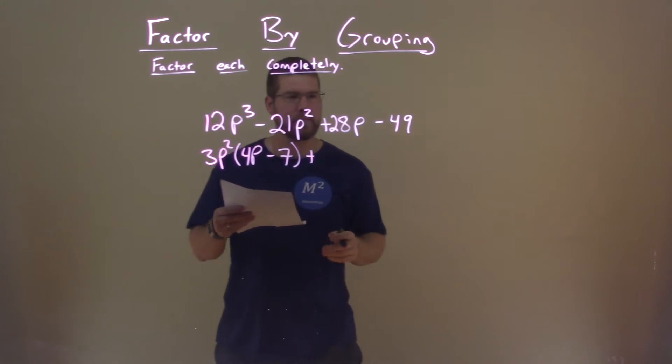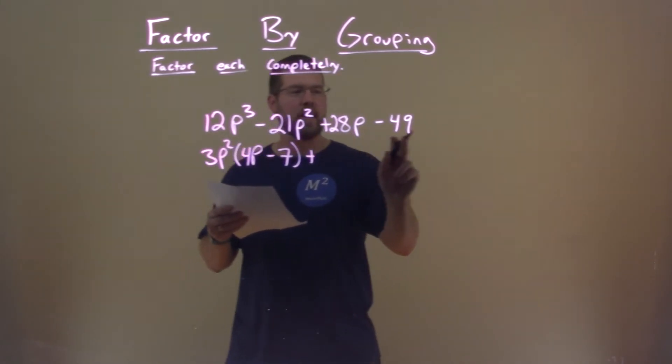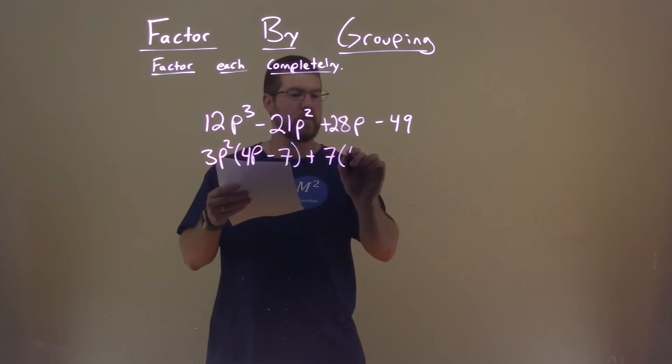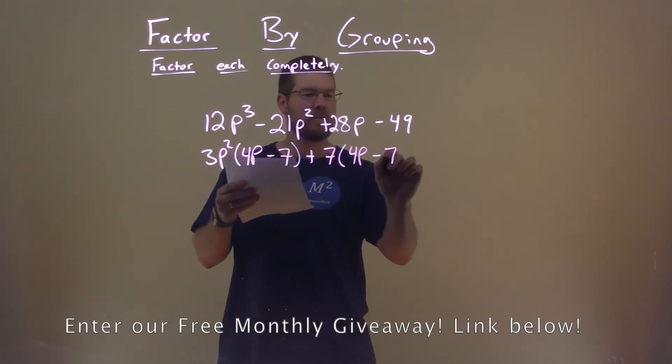Now let's look at the second part. A 7 goes into 28 and 49. Pull out a 7, and what are we left with? Well, 4p minus 7.